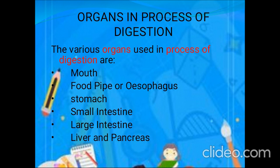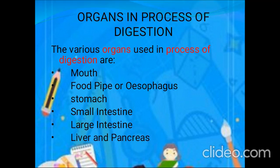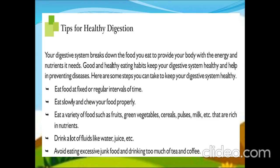In this process, the liver and pancreas play a vital role. The liver filters harmful substances from the blood and produces bile juice, whereas the pancreas produces pancreatic juice which helps in the digestion of carbohydrates, fats, and proteins.